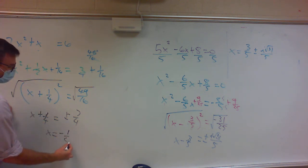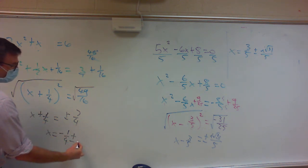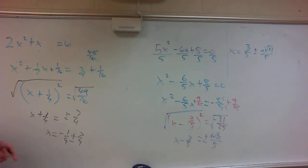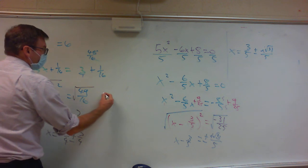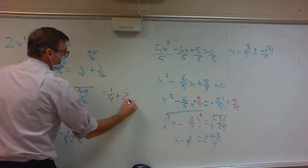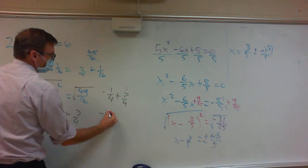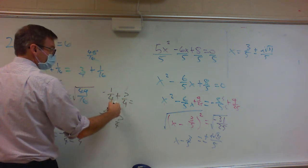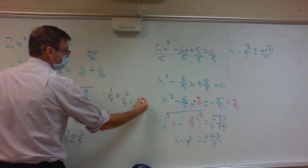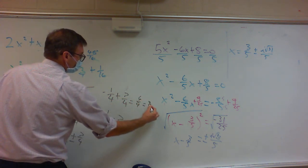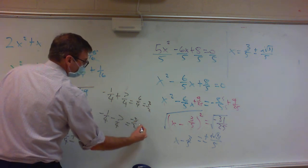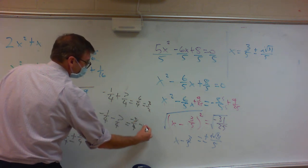Sometimes when you complete the square you get a nice answer. This gives me x equals negative 1 fourth plus or minus 7 over 4. Whenever you have a nice answer, I expect both answers: negative 1 fourth plus 7 over 4 gives 6 over 4, which is 3 over 2. And negative 1 fourth minus 7 over 4 gives negative 8 over 4, which is negative 2.